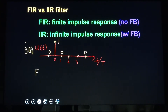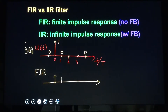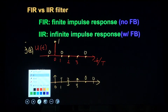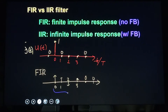For an FIR filter, the impulse response has some nonzero values for a few samples and then becomes 0 after some finite period. So we have only a finite number of nonzero values in the impulse response — that is why it is called finite impulse response.